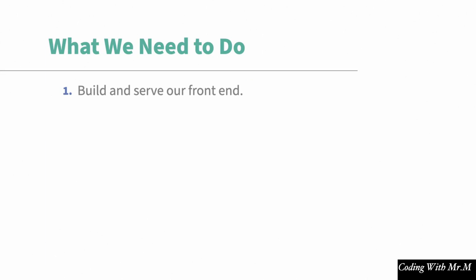The first thing we're going to need to do is build and serve our front end. We'll go over this in more detail shortly, but just know that we're going to need to convert our front end and back end so that instead of being two separate applications that are running and communicating, they're both being served by a single server. So once we've built and served our front end, we're going to set up a Render account, which is the hosting platform we're going to use to host our application, and it has a free tier.